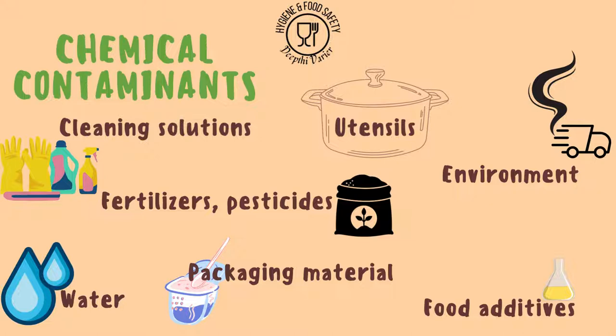Chemical contaminants also include fertilizers and pesticides sprayed on vegetables and fruits in the field. Residues of these chemicals remain on fruits and vegetables, and when you eat them without washing properly, that is how they get inside your body. Several types of utensils can leach chemicals into food — for example, plastic leaching when using a vessel in the microwave, or a frying pan coating coming off, which is also a chemical contaminant.